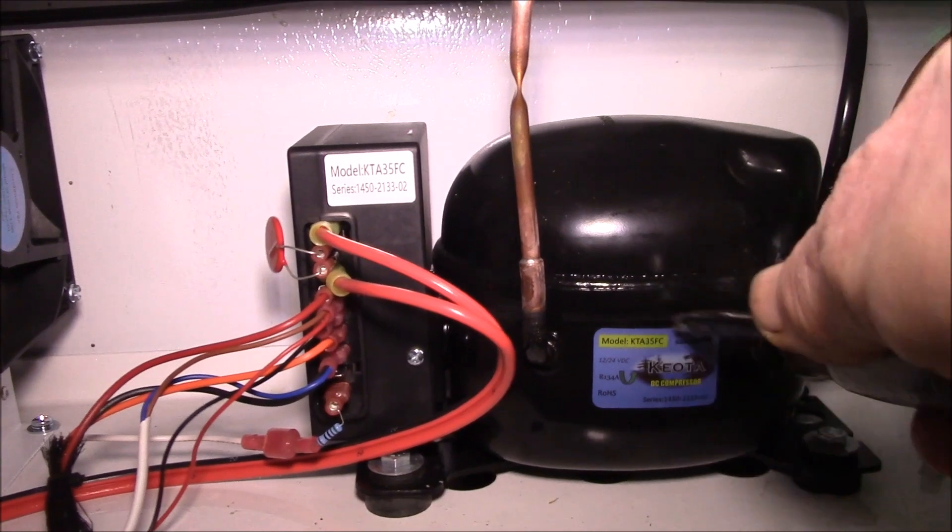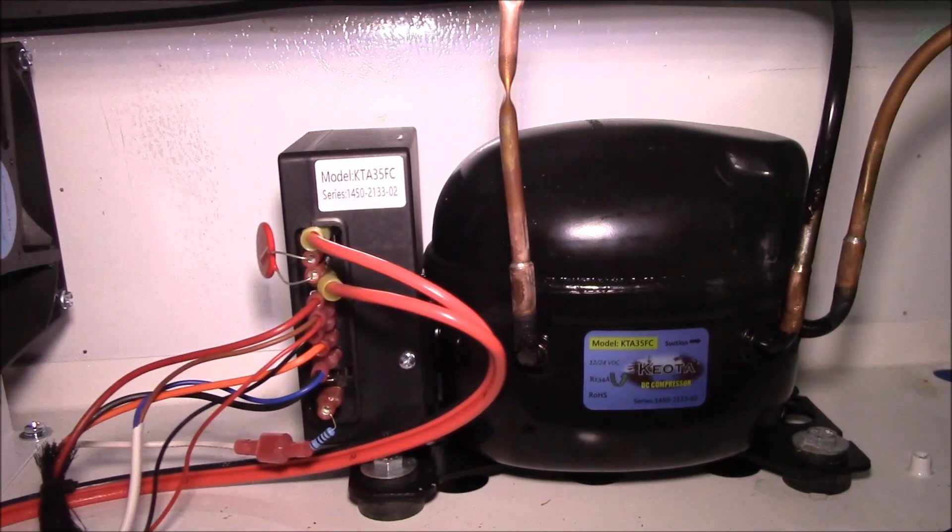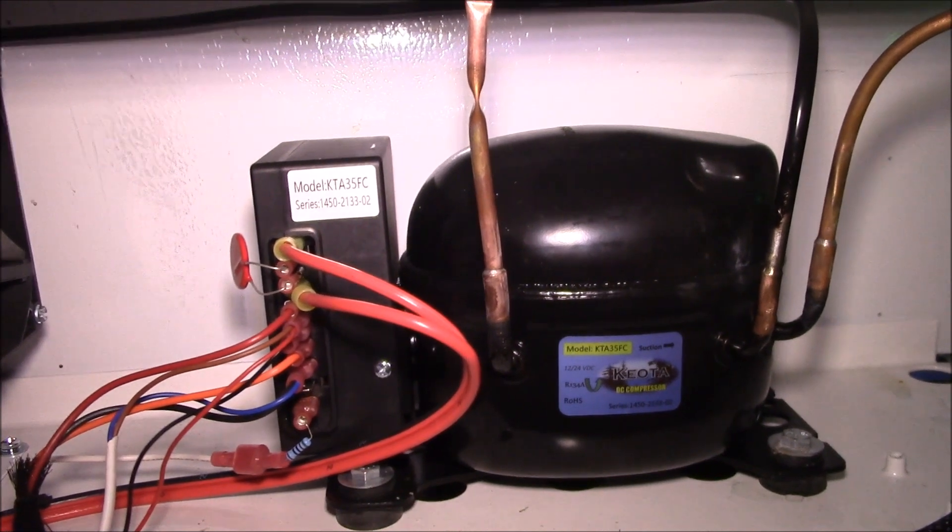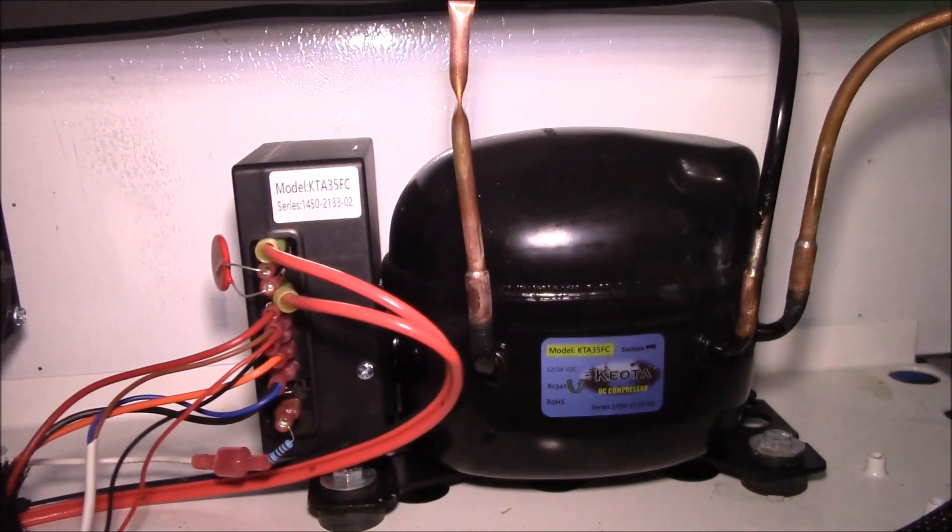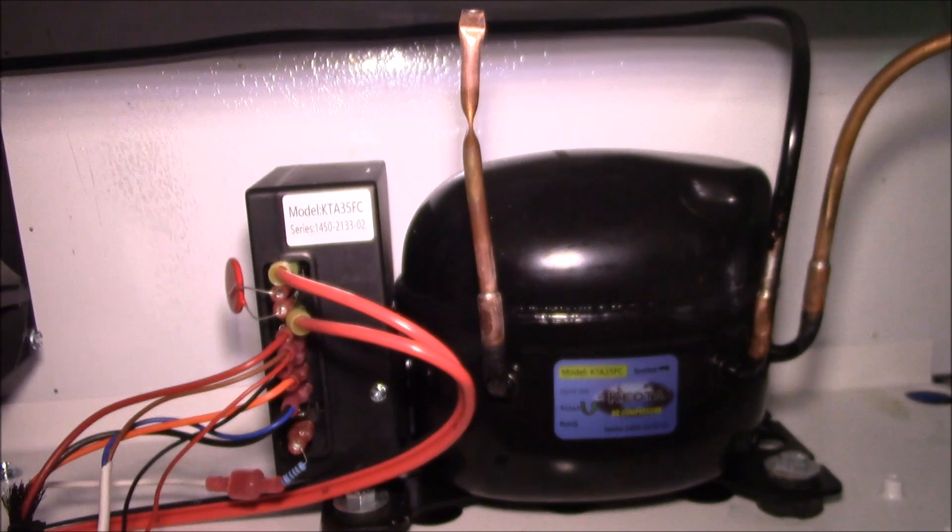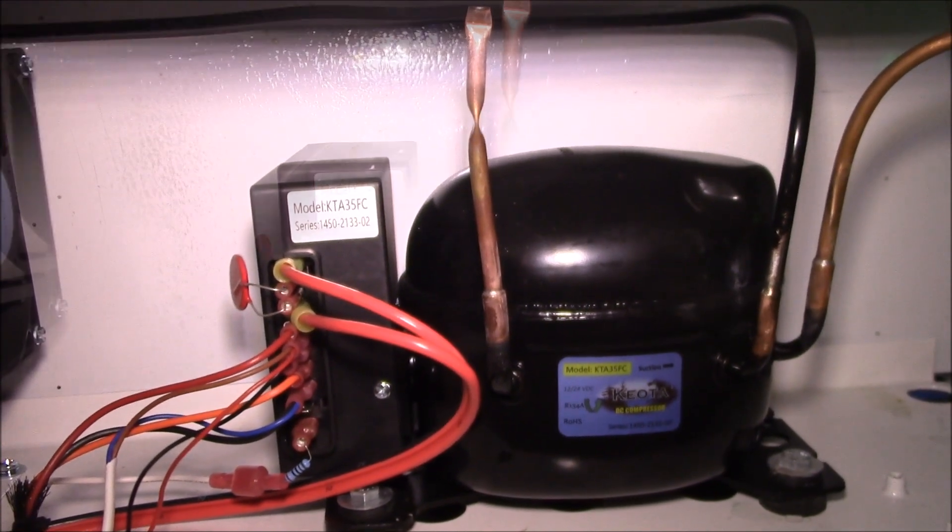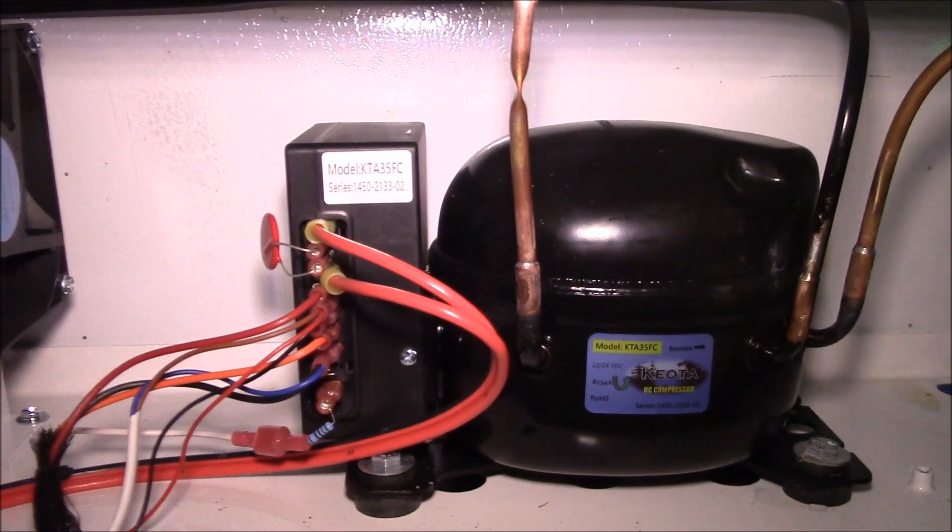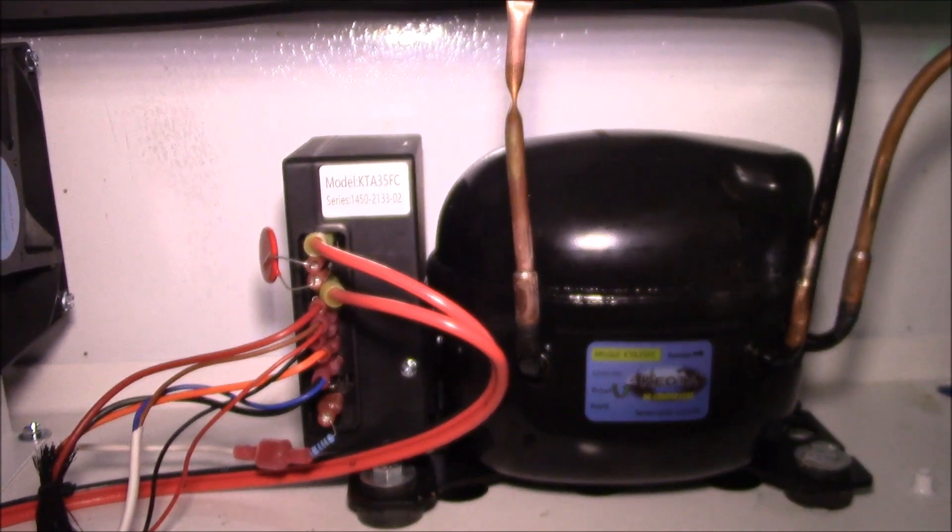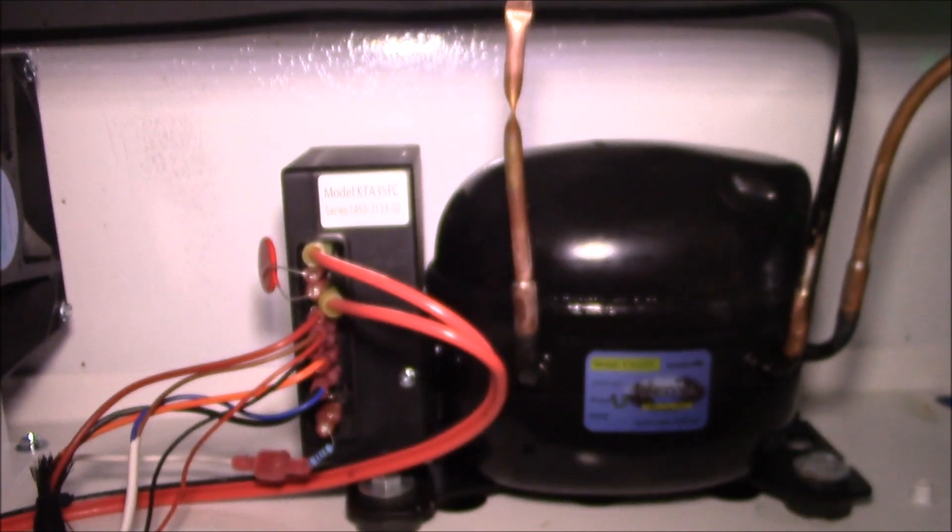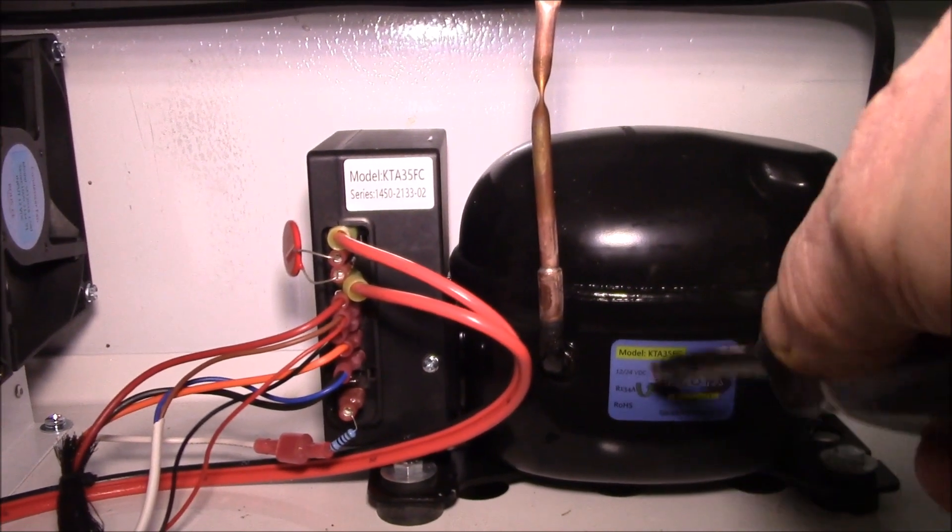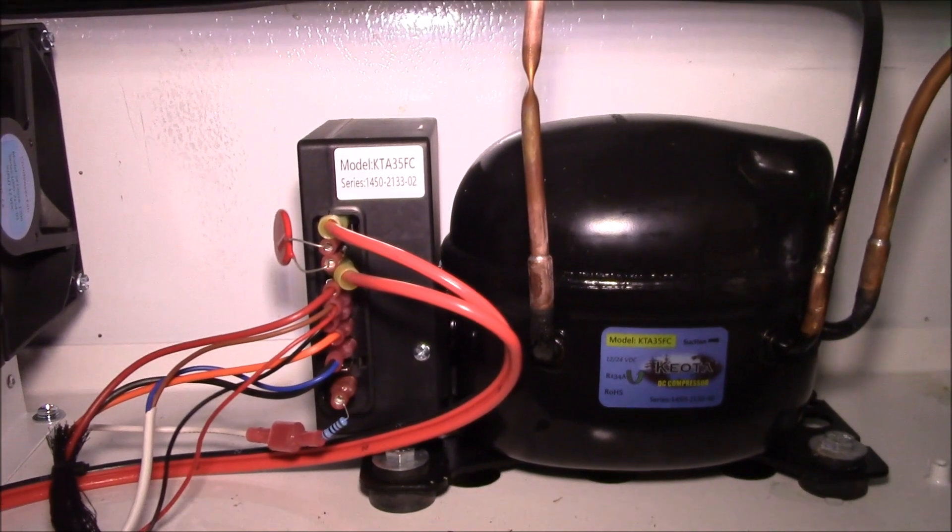There's a brand called Fridgeabout that does marine refrigeration. Dometic uses these in their RV compressors. They also have a BD50 compressor which is larger and higher output. This one is roughly 60 watts when running. The BD50 compressor is about 90 watts. The compressor itself is a three-phase brushless motor.